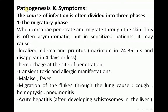Pathogenesis and symptoms: The course of infection is often divided into three stages. The first stage is the migratory phase. When cercariae penetrate and migrate through the skin, this is often asymptomatic, but in sensitized patients it may cause localized edema and pruritus, maximum at 24 to 36 hours and disappearing in four days or less.